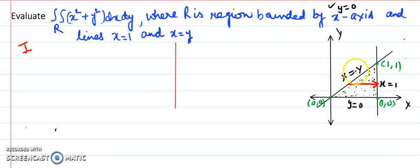We can read the values from the diagram. When moving in the x direction through this region, I observe that every time the region starts from the line x equals y. So the lower limit for x is x equals y.